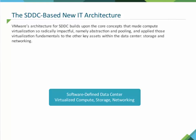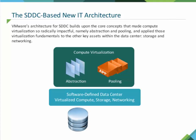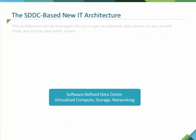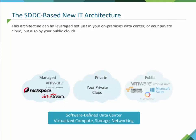VMware's architecture for SDDC builds upon the core concepts that made compute virtualization so radically impactful — namely abstraction and pooling — and applied those virtualization fundamentals to the other key assets within the data center: storage and networking. This architecture can be leveraged not just in your on-premises data center or your private cloud, but also by your public clouds.